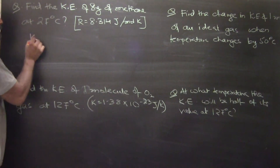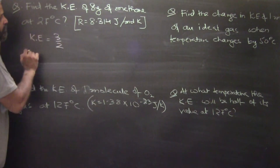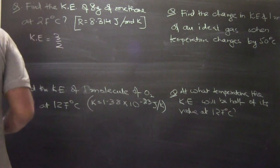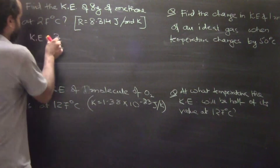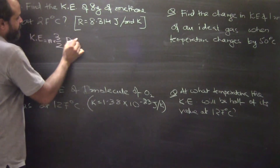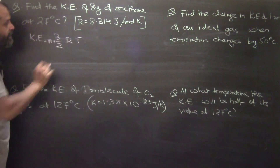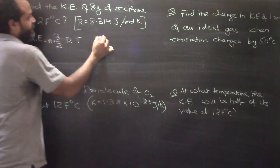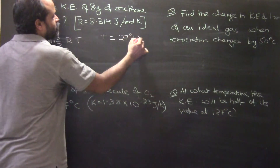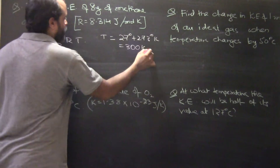We know the formula: kinetic energy is equal to N into 3 by 2 into R into T, that is number of moles into 3 by 2 into R into T. The value of R is given. T will be 27 plus 273, that is going to be 300 Kelvin.